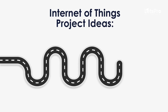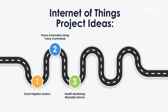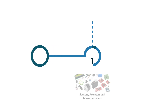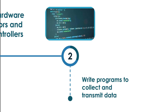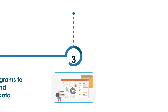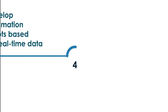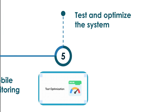Project ideas: Smart Irrigation System, Home Automation Using Voice Commands, Health Monitoring Wearable Device, Smart Waste Management System, and IoT-based Air Quality Monitoring System. For prototype development: set up hardware like sensors and microcontrollers, write programs to collect and transmit data, develop automation scripts based on real-time data, create a mobile app for monitoring and control, and test and optimize the system.